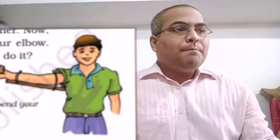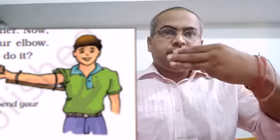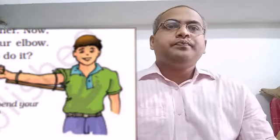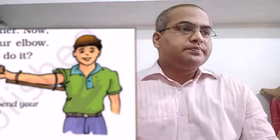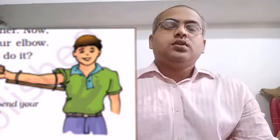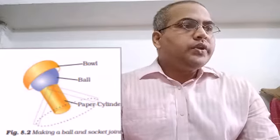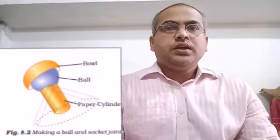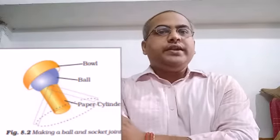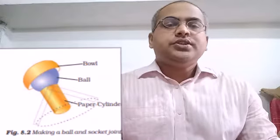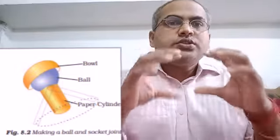Now, what is a ligament? Ligaments are elastic band-like structures — tough flexible bands of elastic tissue — which attach two bones together. Wherever a joint is present, it is covered by a tissue called cartilage, a rubbery tissue which does not allow the two bones to hit each other. These joints help our bones to move in one direction or another.